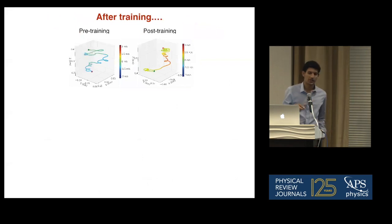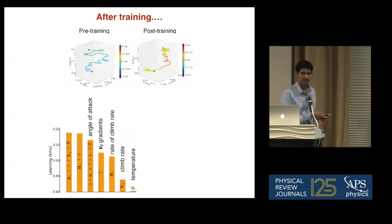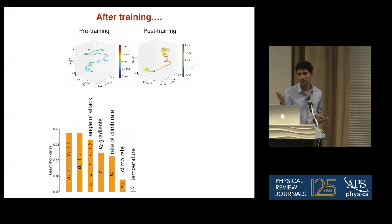You can play around with the state space — decide to give the glider certain kinds of information and withhold others. For instance, if you give it only temperature, it doesn't learn anything. If you give it the climb rate it learns a little but not much. It turns out the two most important quantities are the rate of change of climb rate — which is the vertical acceleration — and the gradients of velocity across the wings. These two complement each other, and putting them together gives a large increase in performance. The useful information for soaring is contained in vertical wind accelerations and wind velocity gradients across the wings.